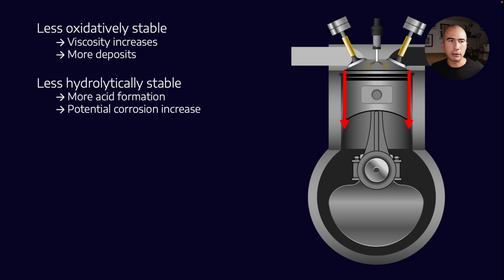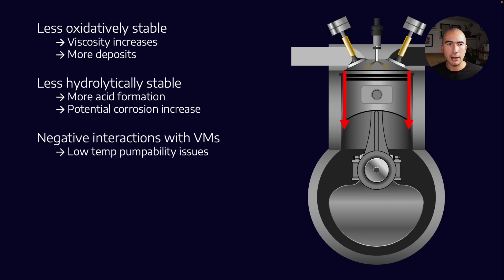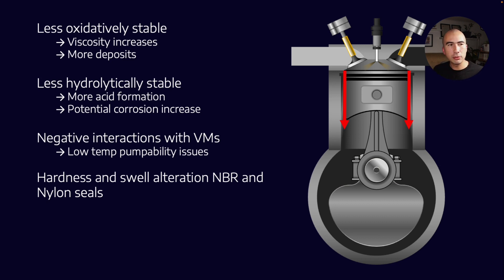Biodiesel is also less hydrolytically stable. Being an ester, when it comes into contact with water it breaks down back into an acid, creating acids continuously — which can lead to corrosion, particularly in crankcase bearings. Water is also a byproduct of combustion, so the combination of water plus a bio-derived ester means you're going to be producing acids. There is also some evidence of a negative interaction with certain viscosity modifiers causing low temperature pumpability issues, potential effects on seal swell in nitrile rubber and nylon seals, and ultimately shorter oil drain intervals.